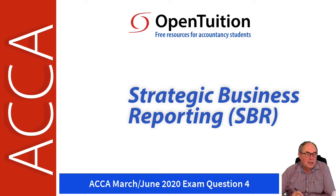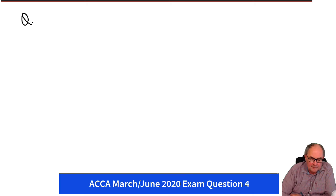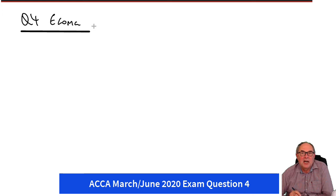We'll take a look now at the last question, question four. The name of the company referred to in the scenario is Ecoma. The first eight marks are for discussion around environmental, social, and governance. There are two extra marks for clarity.